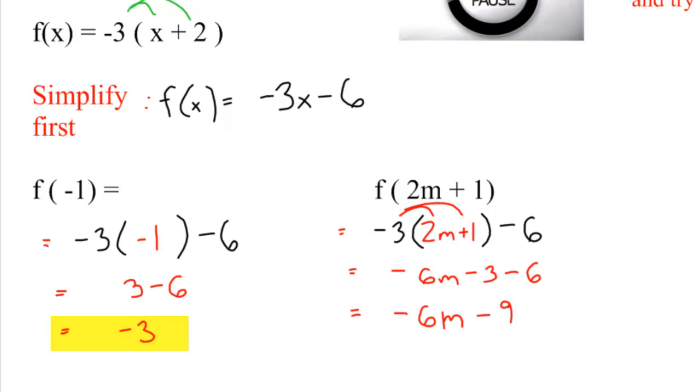For the second example, f of 2m plus 1, just replace your x with a quantity of 2m plus 1. Distribute it, you get negative 6m minus 3 minus 6, which then simplifies to negative 6m minus 9.